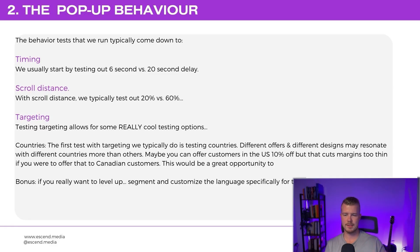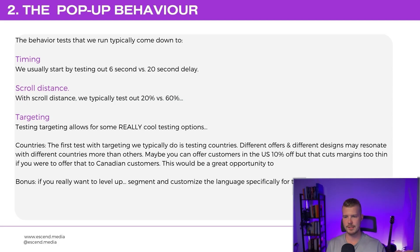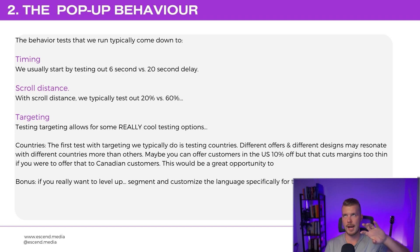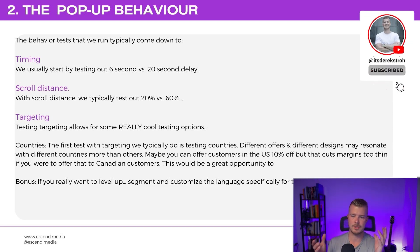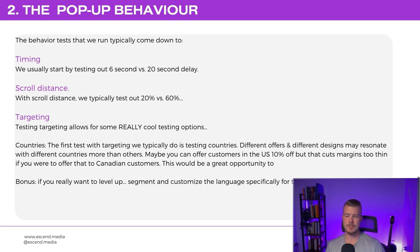Targeting is really cool — there are tons of different things you can do. The first thing we test is countries: including or excluding different countries. You can get really deep, testing different offers or designs that resonate better with Canadian, US, or Australian customers. For example, some clients have better margins in Canada versus the US, so if 10% off cuts too deep into margins in one country, you can try a different offer — a great opportunity to test country-specific offers.